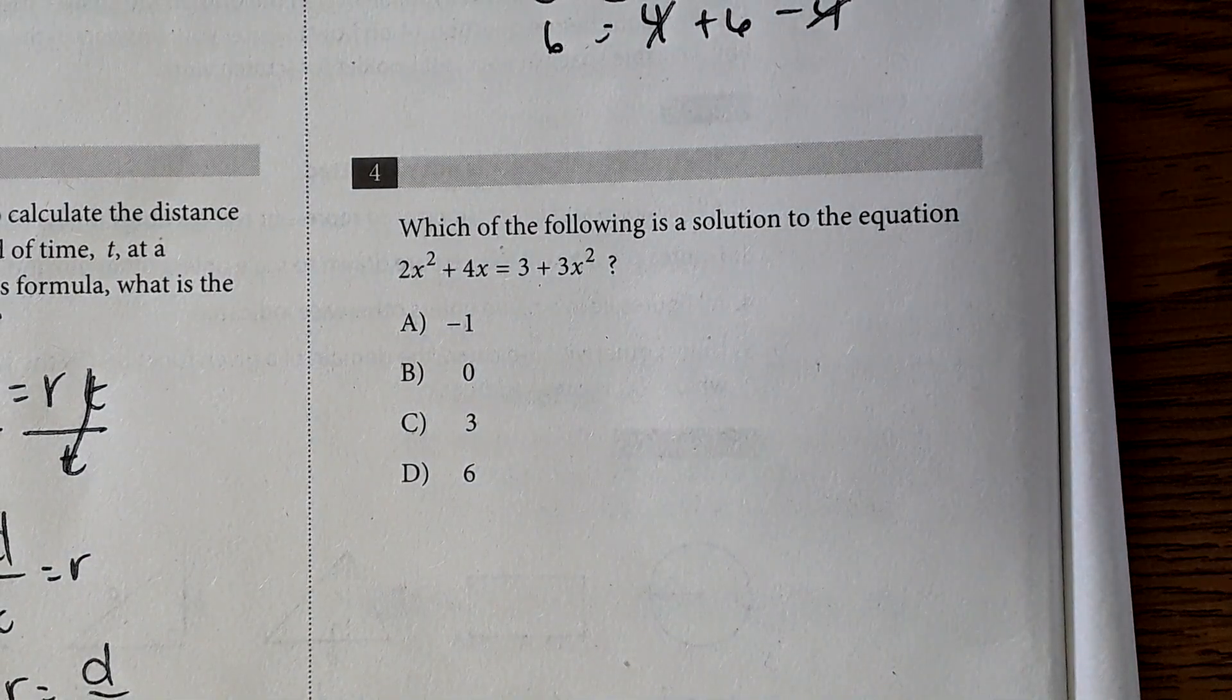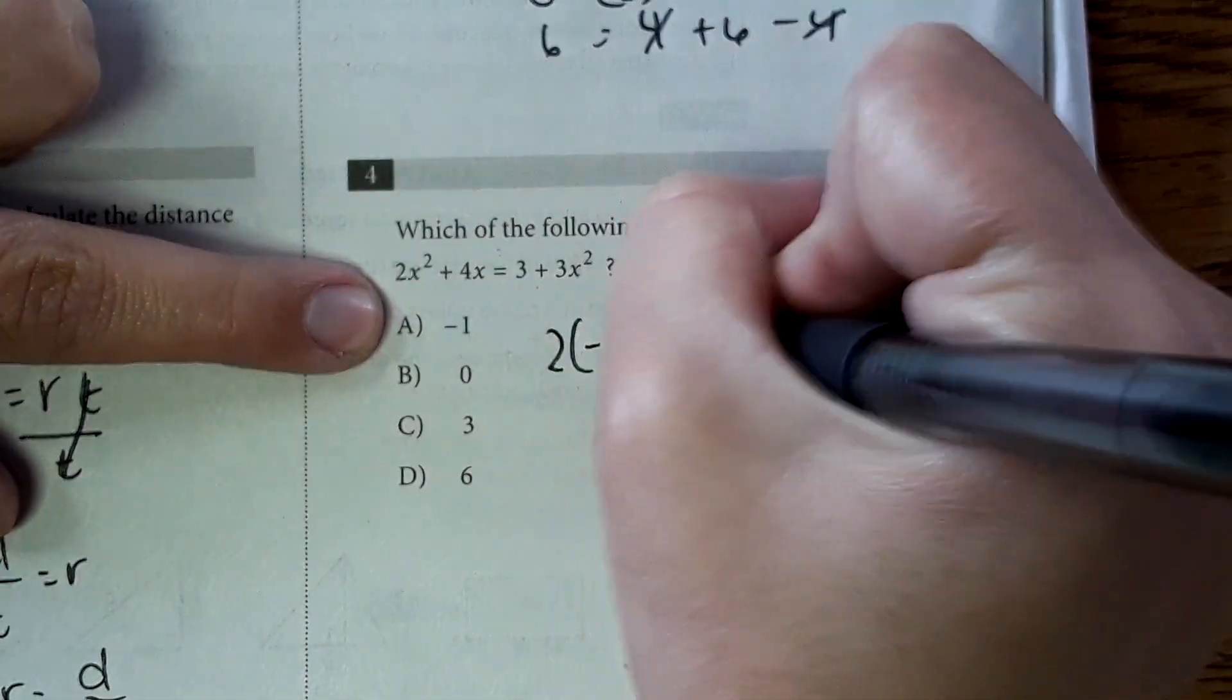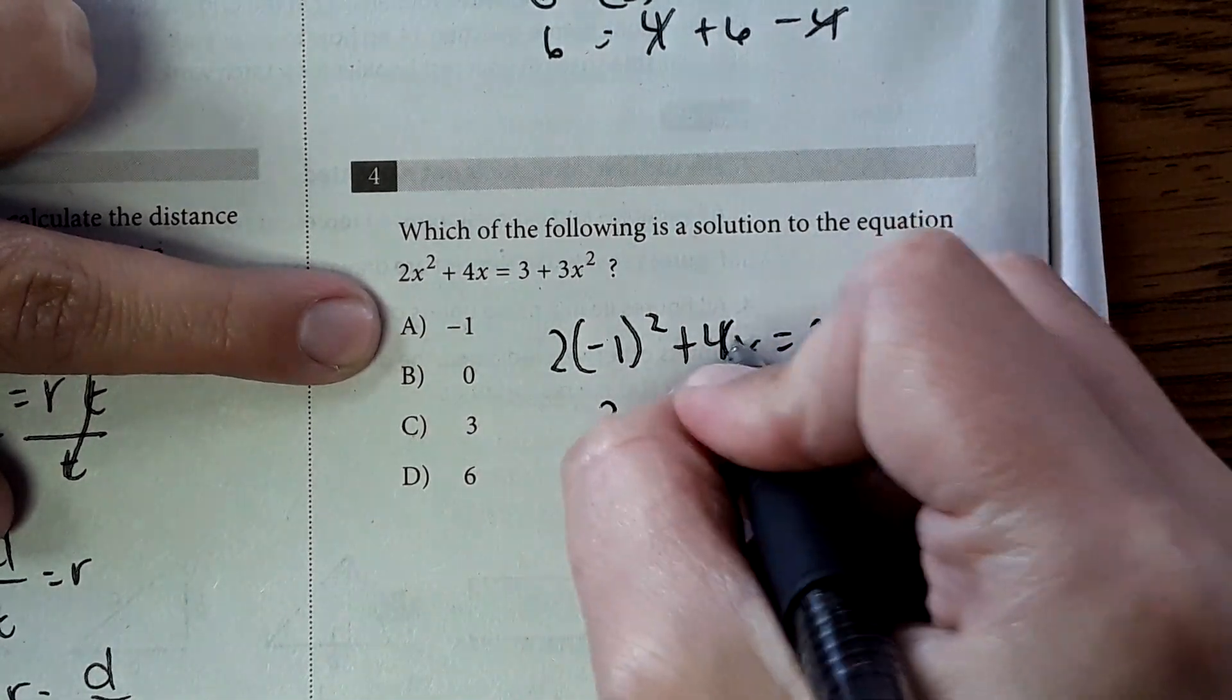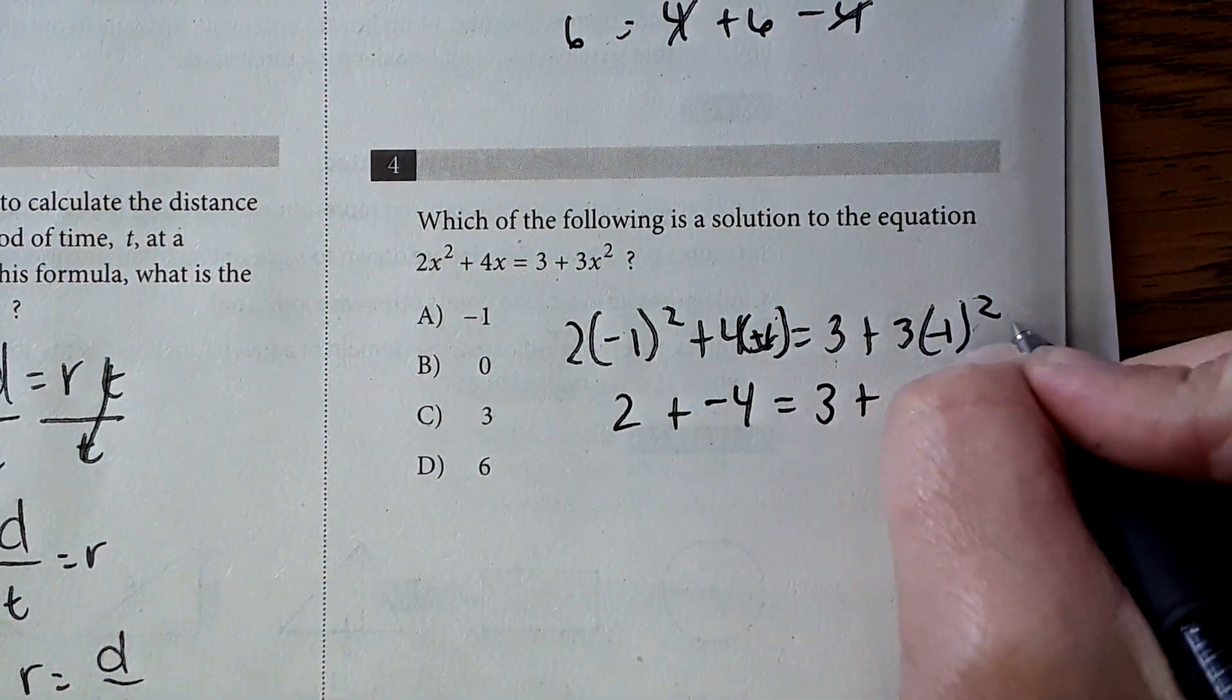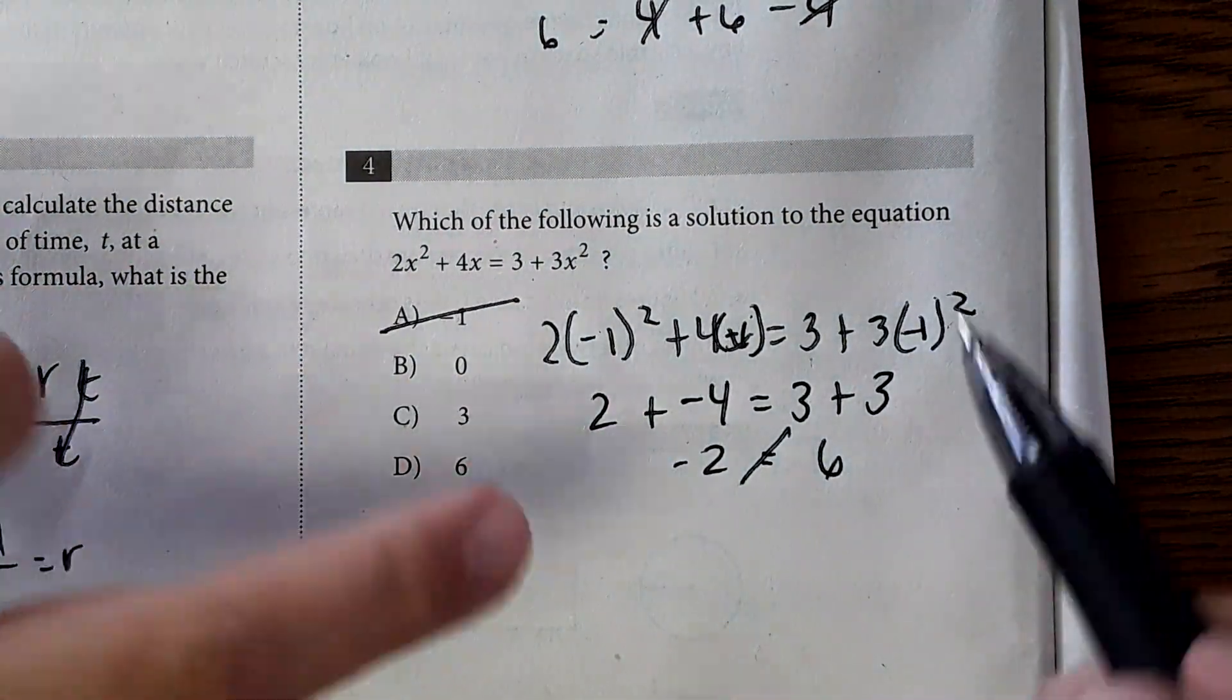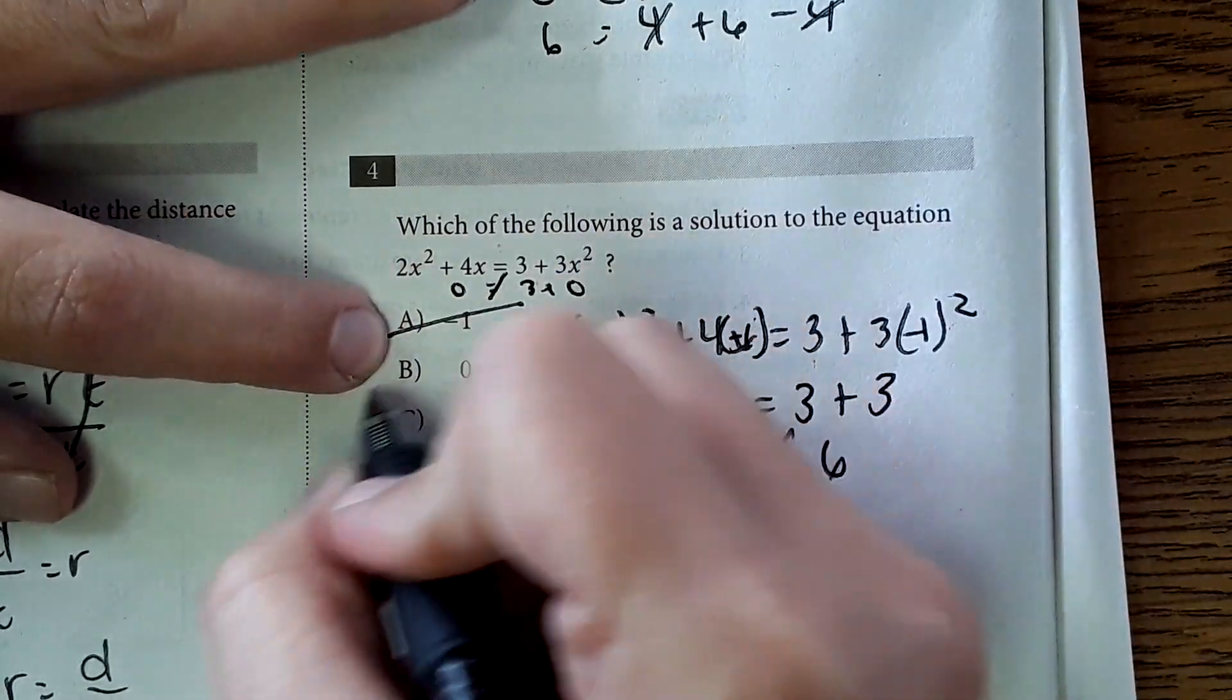Which of the following is a solution to the equation? For this one, I'm going to take each of these answer choices, plug it in, and see if it works. So negative one, I'm just going to plug that in. Negative one squared, it would be positive one, times two is two, plus four times negative one would be negative four. Negative one squared, negative one times negative one, it would be positive one, times three would be three. And I get six equals negative two. That doesn't work, so this is not a correct answer. I'm not going to write out the work for each of these. With the zero, this would be zero plus zero, which is just zero. Over here would be zero plus three. Zero does not equal three, so B is not a correct answer.